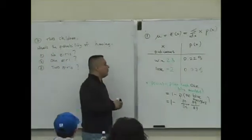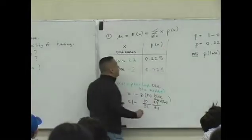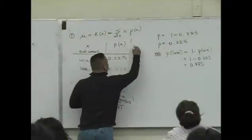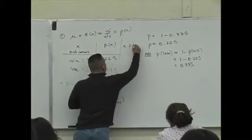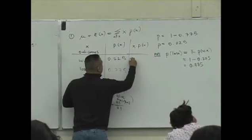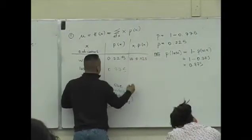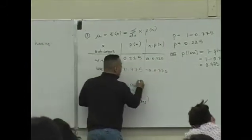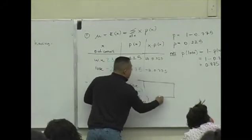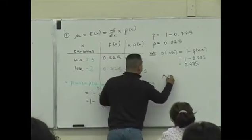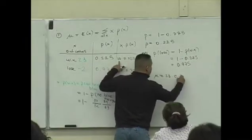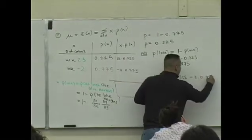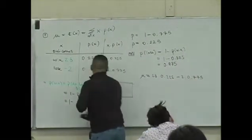So now, what you do is, the hard work is done. This is all the hard part. So now, this is X times that P of X, which is going to be 23 times 0.225, and then you're going to have minus 2 times 0.775. Whatever those values are, what do you do with these values? You add them up. So meaning, that expected value mu, I can say is 23 times 0.225, minus 2 times 0.775.